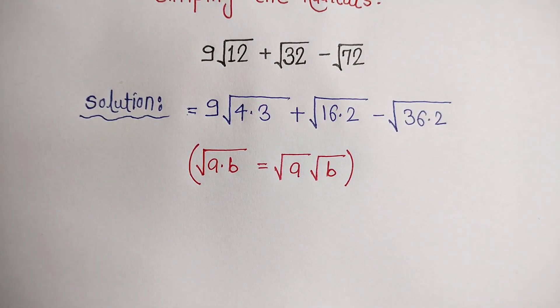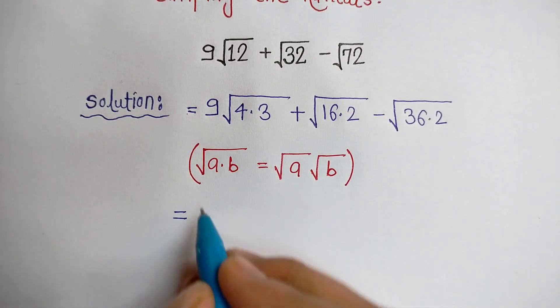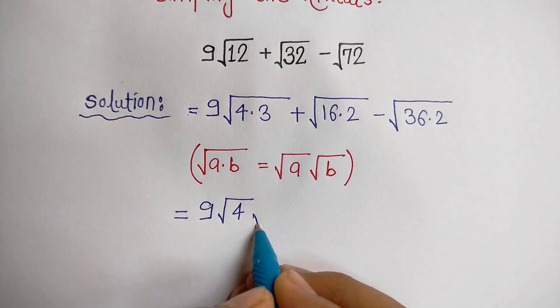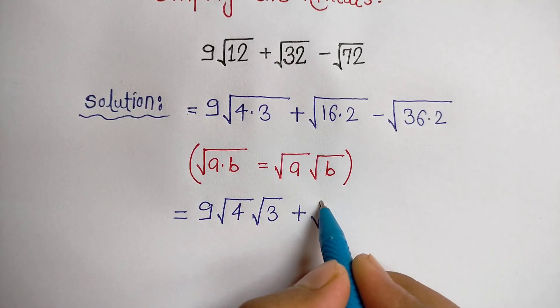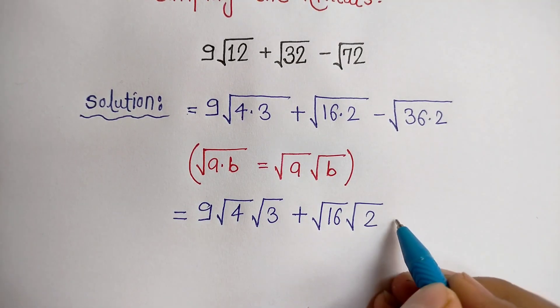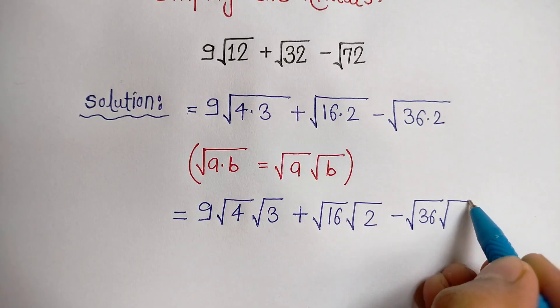By applying this rule we can write 9√4 × √3 + √16 × √2 - √36 × √2.